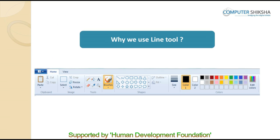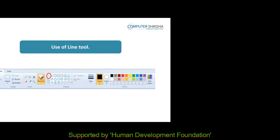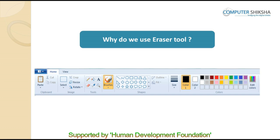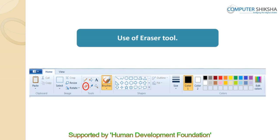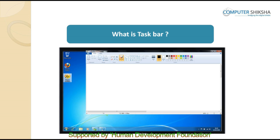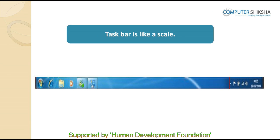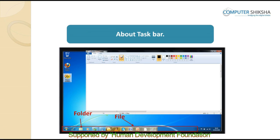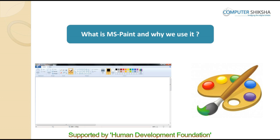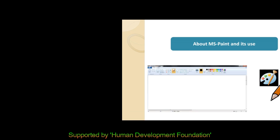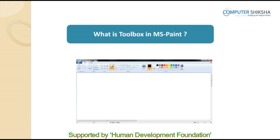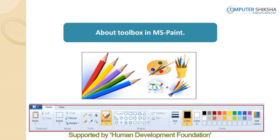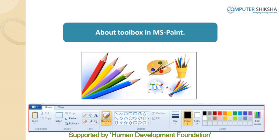Why do we use the line tool? Whenever you need to draw a line, you use the line tool. Why do we use the eraser tool? The eraser tool is used to erase off something that we do not need. What is a taskbar? The taskbar is like a scale and it tells you about the files or folders that you are either working on or have hidden from the screen. What is MS Paint? MS Paint is a software which we use to draw things. The toolbox is an important part of MS Paint which contains all the tools for drawing.